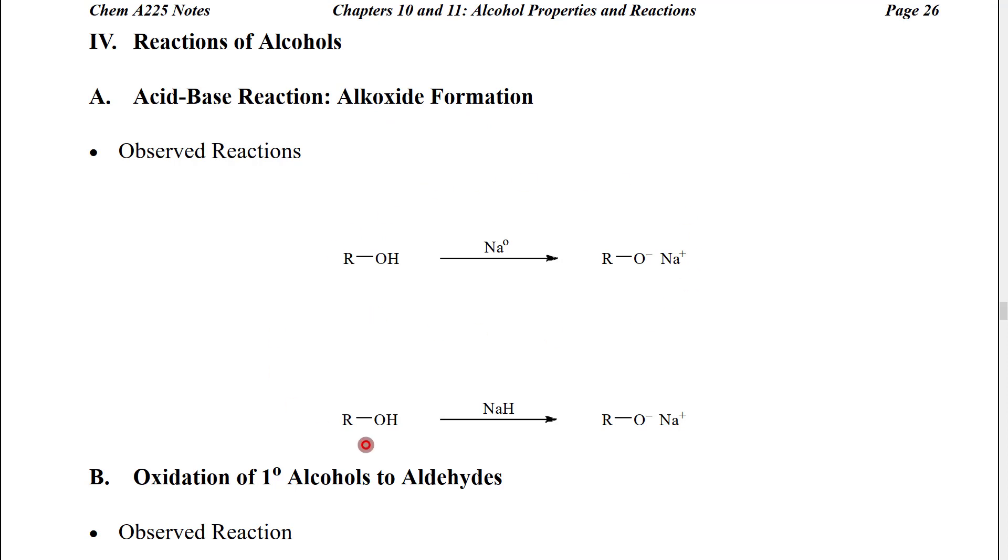We have two common ways of doing this, both involve replacing or deprotonating and using a sodium counter ion. The first one is to just mix the acid directly with sodium metal. This is particularly effective with alcohols that have small carbon groups like methyl and ethyl.